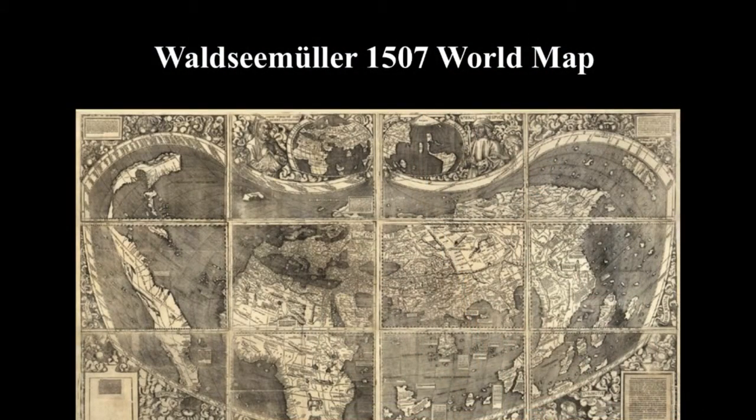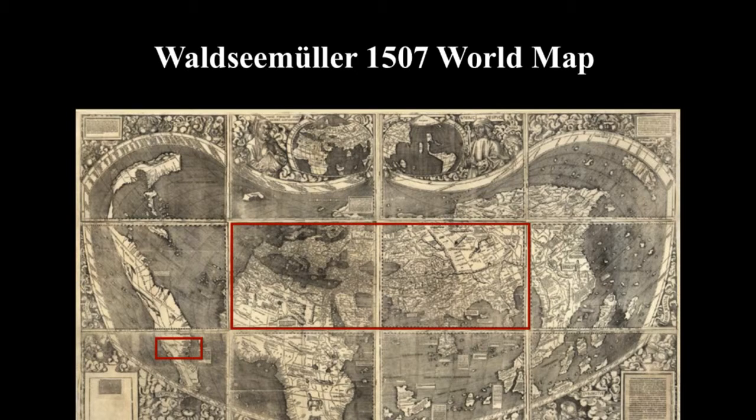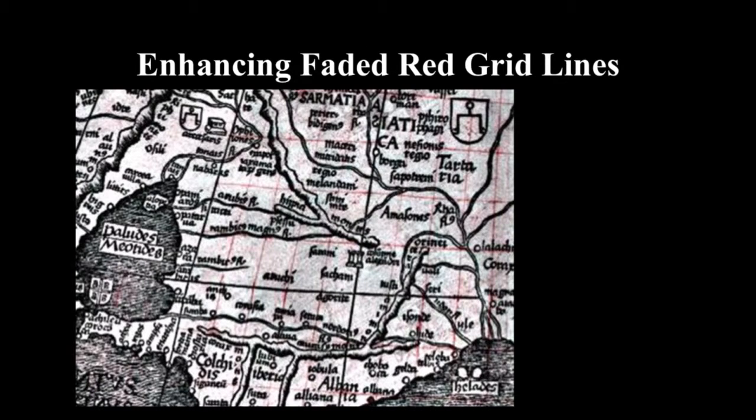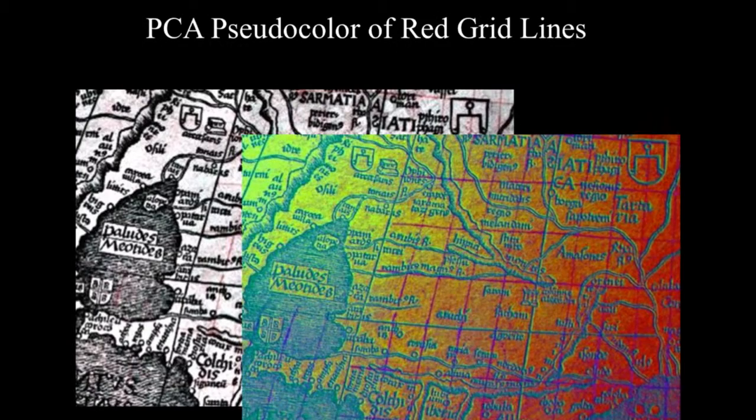An example of bringing that alive: the Waldseemüller 1507 world map — the first map to refer to America. When we look at this with different types of imaging, we can see the first reference to America, and we can look at the central sheets that originally had cartographic lines that had faded over history. Those don't exist anymore, but with special imaging we can bring those back, show where they were, and do further processing to show where they start and finish. For a curator that's really important. As a scientist, I need the curator to tell me that's important — we have to integrate. We can then look at how we process that differently to see what the original woodblock might have looked like and what tools they had in 1507. We're pulling the curatorial and the scientific together and making it come alive.